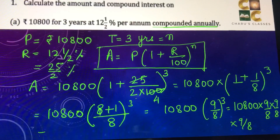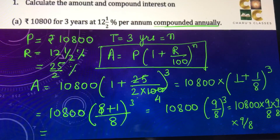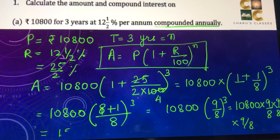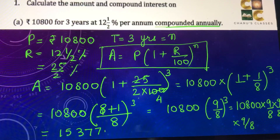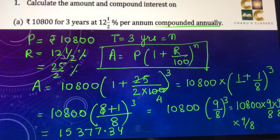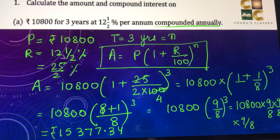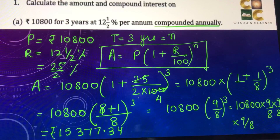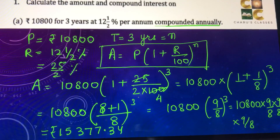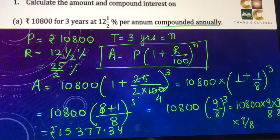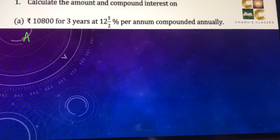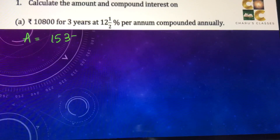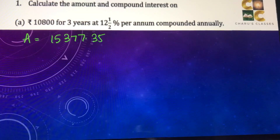If you solve this, the amount comes out to rupees 15,377.35. So this is our amount. We still have to find the compound interest.